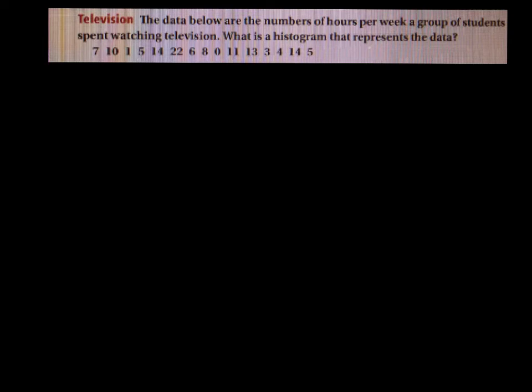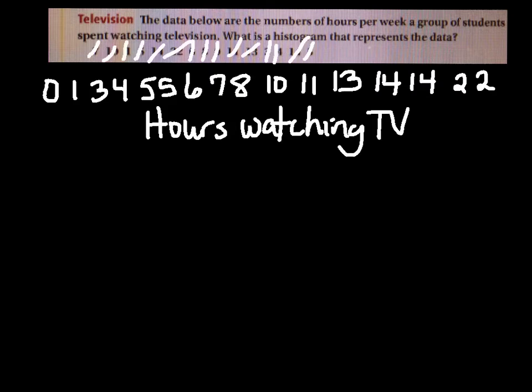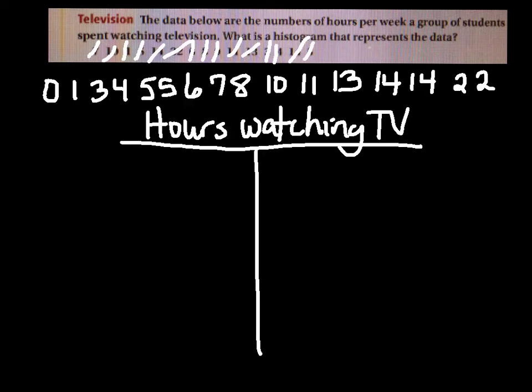Alright, let's do our first one. This is the data for the number of hours per week a group of students spent watching television. We're going to draw a frequency table — not a histogram — that represents the data. The first thing you're going to do is always put the numbers in order. We have our numbers in order and our frequency table titled. You always title them. We want two columns: the first column is our interval, and you'll always be told what your interval will be. The second column is the frequency — the number of values that occur in that interval.